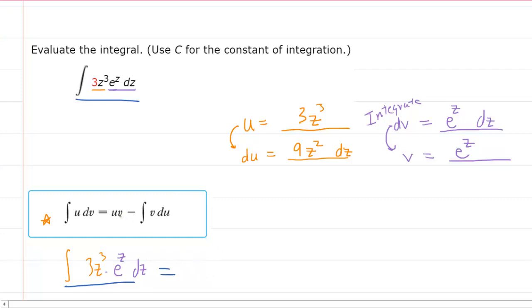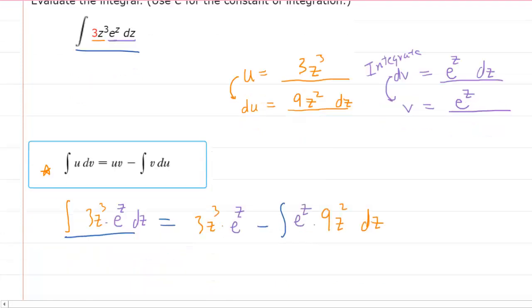We can see that on the right side, we have u, which is 3z cubed, times v. We determined v to be e to the z, and then we will do minus the integral of, yet again, the v, which is e to the z, times du. And looking back at our chart, the du was 9z squared dz.